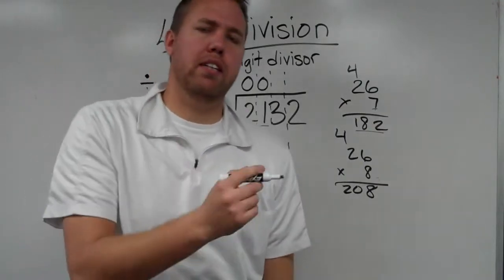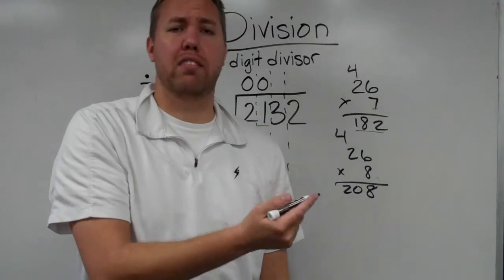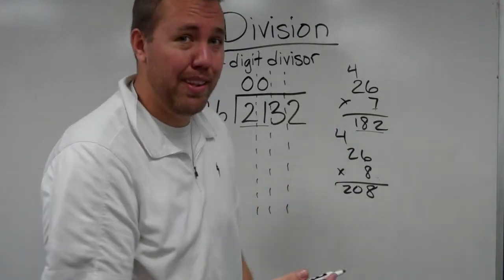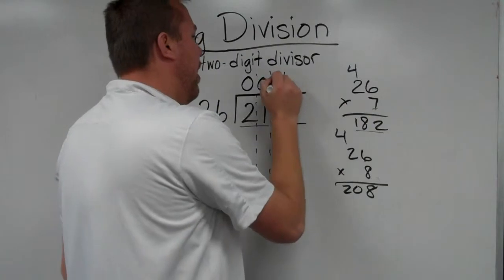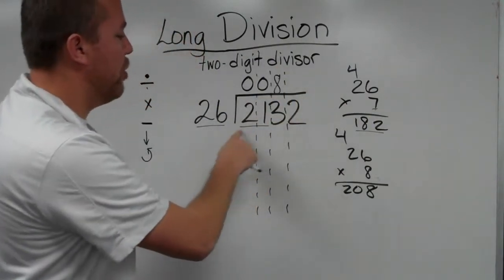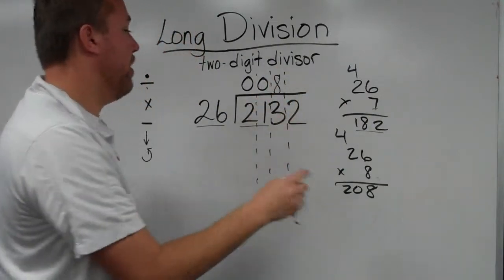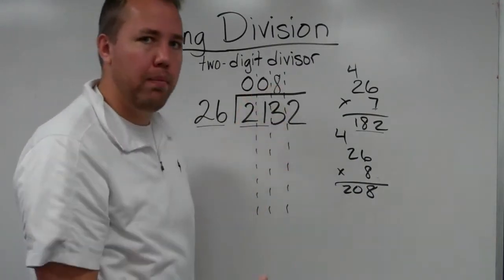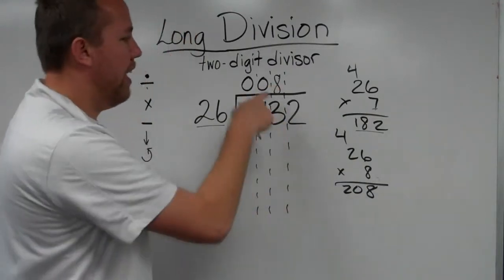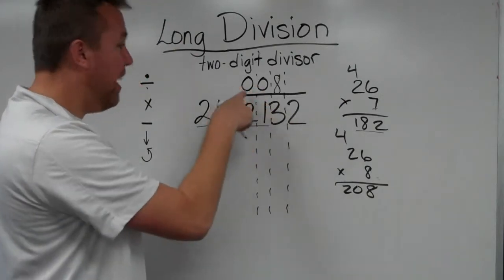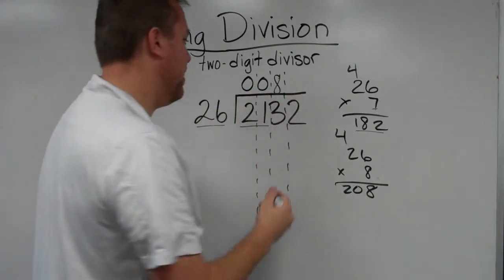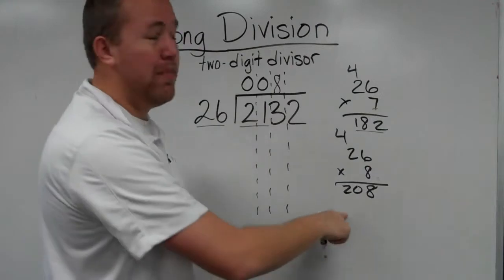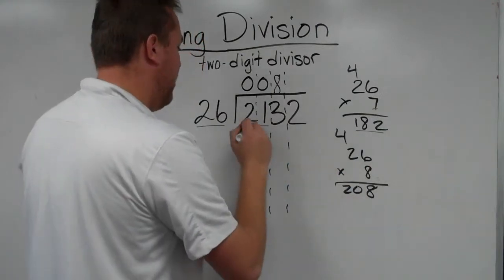So daddy now, being confident, can say, hey, 26 goes into 213 eight times. And we put the 8 directly over the 213. Because 26 will go into 2132 eighty-something times, not 800 if we put it there, not 8,000 times. 80 something times. Mommy's already done the work. Thank you very much.